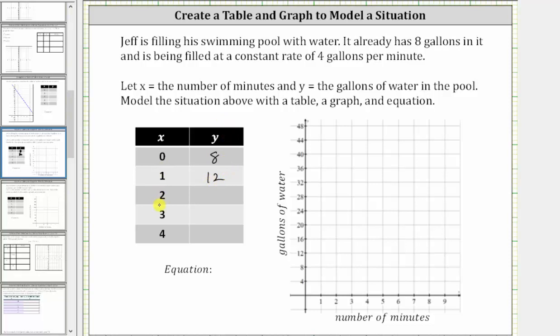When x is two, the amount of water in the pool is going to be 12 plus four, which is 16 gallons. When x is two, y is 16.